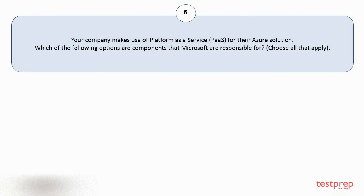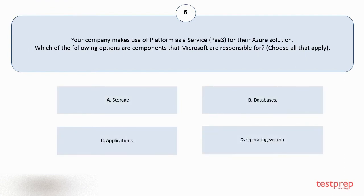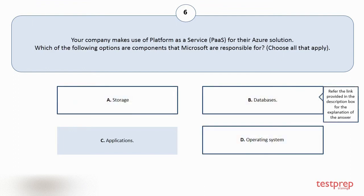Option number six. Your company makes use of platform as a service for their Azure solution. Which of the following options are components that Microsoft are responsible for? Choose all that apply. Your options are: A. Storage. B. Databases. C. Applications. D. Operating system. The correct answers are option A, B, and D.